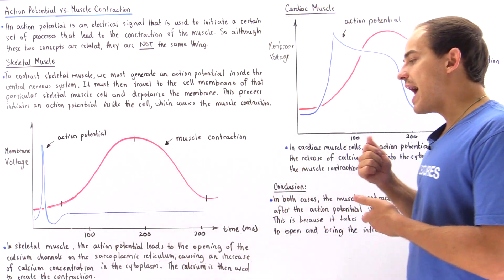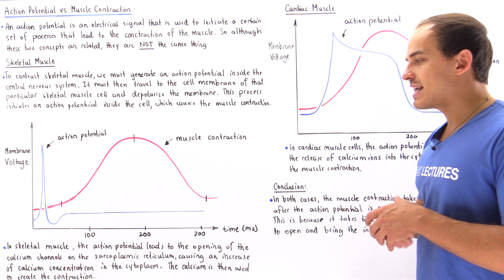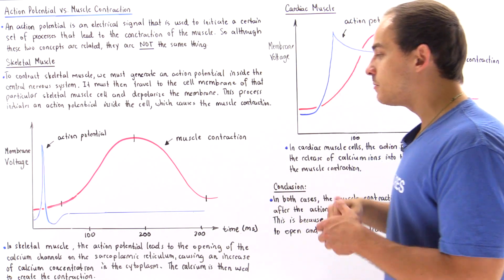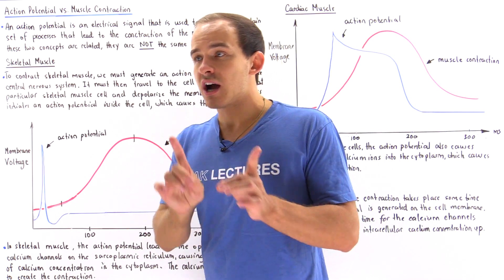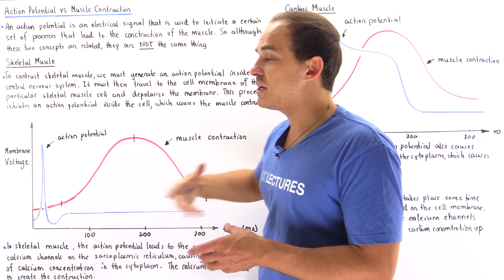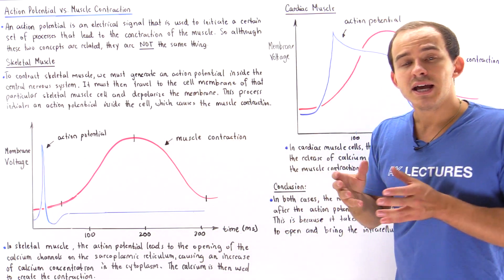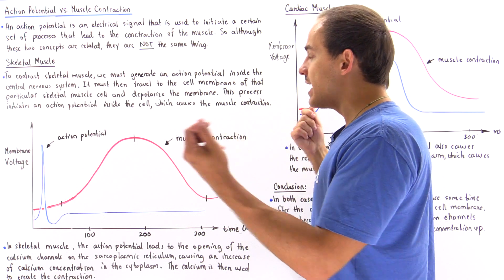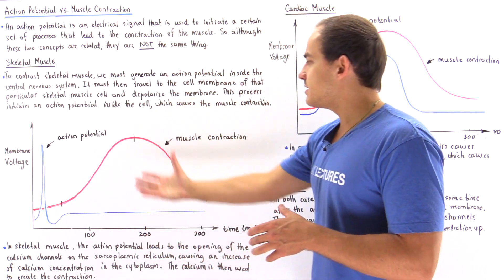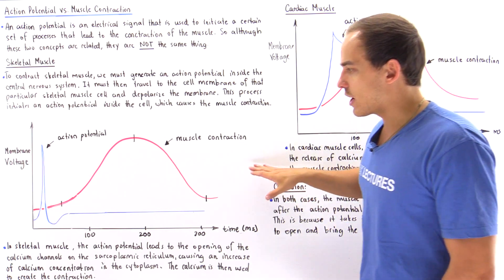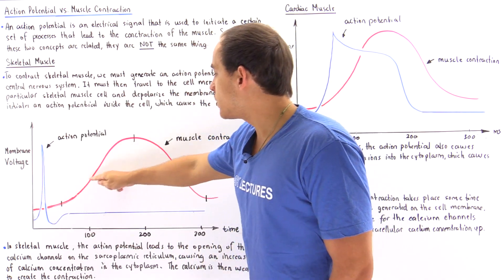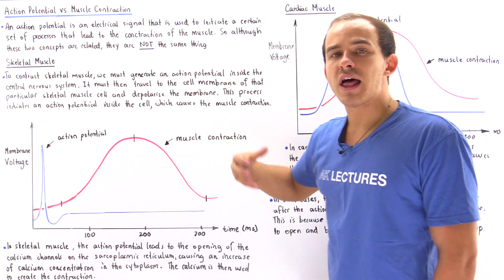In skeletal muscle, the action potential leads to the opening of the calcium channels on the sarcoplasmic reticulum. As the calcium ions flow into the cytoplasm and the concentration becomes high enough, the muscle contraction takes place — because only then do we have enough calcium to bind to the actin of the thin filament and initiate the interaction between the thin filament and the thick filament inside the sarcomere. This is the latent period, when calcium concentration increases; this is the contraction period; and this is the relaxation period.